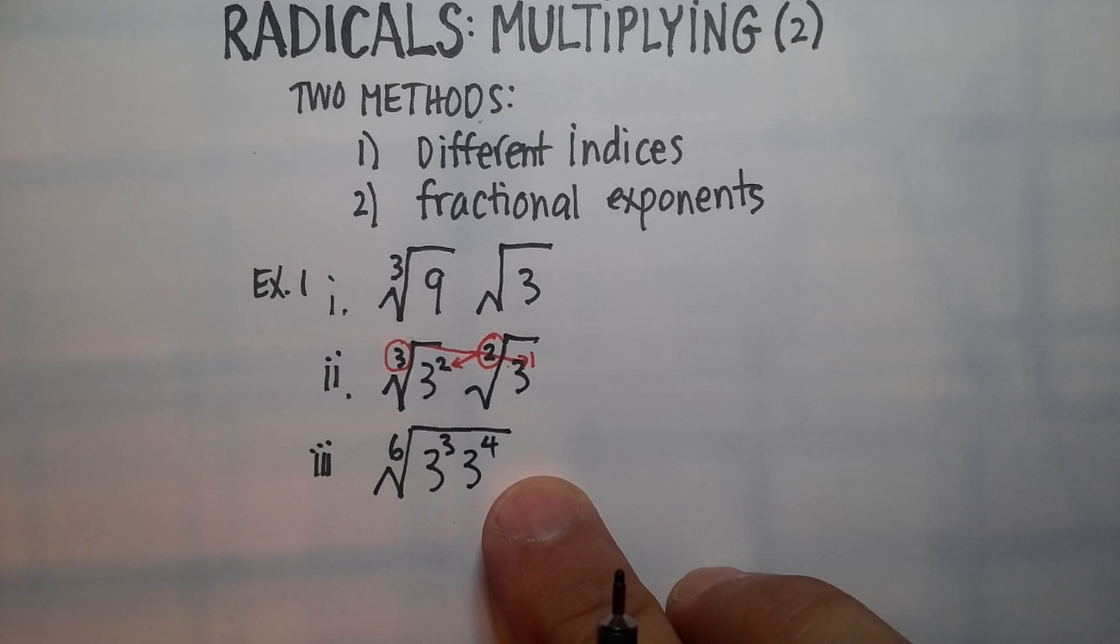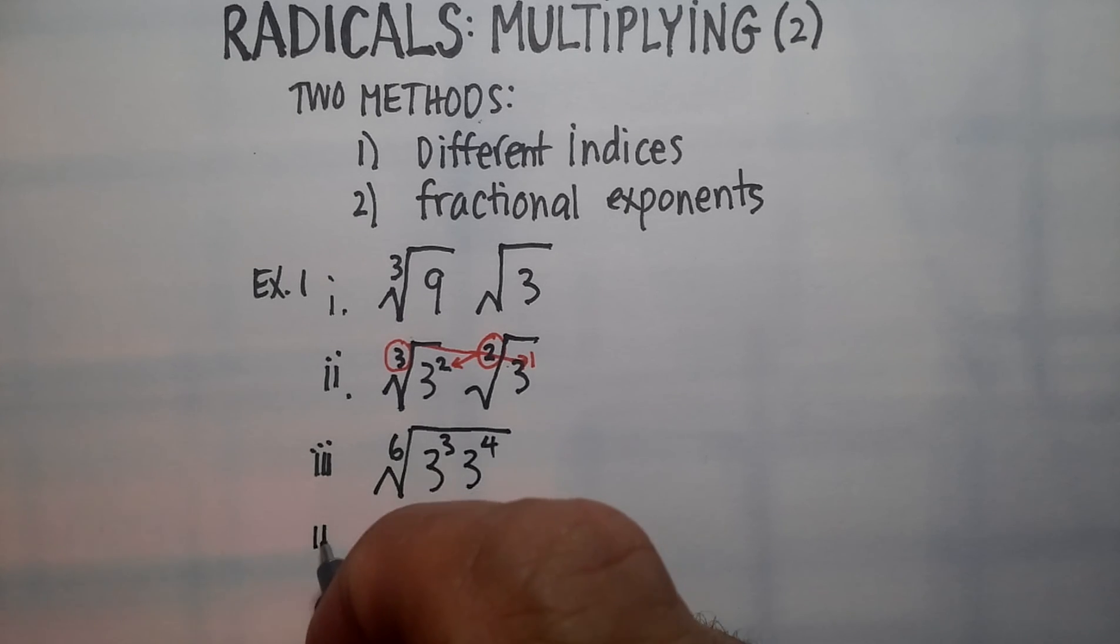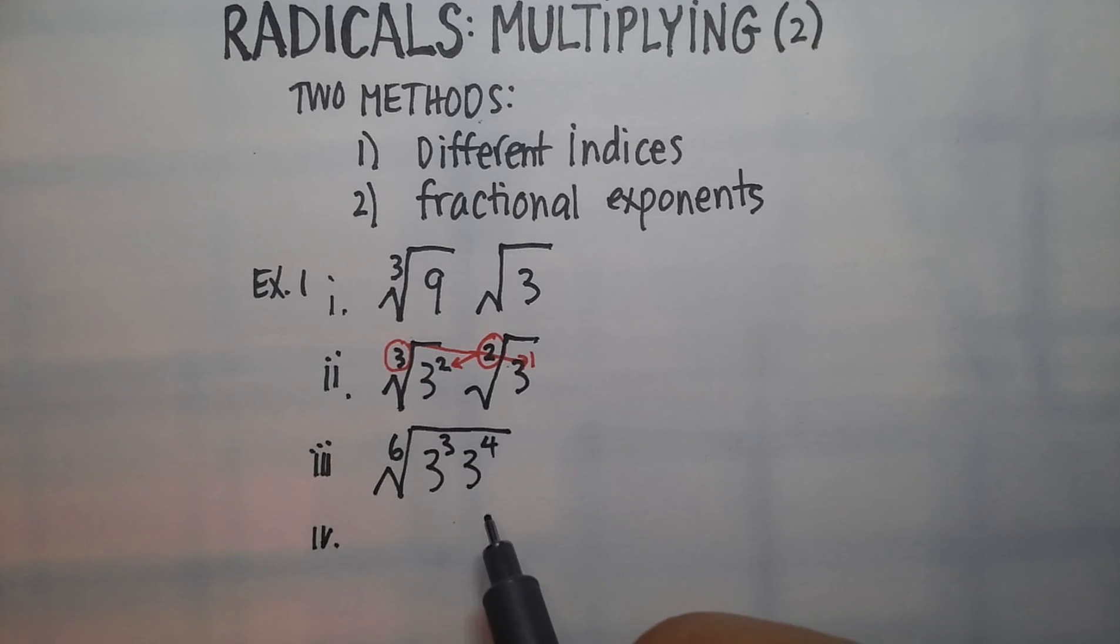Okay? Now, you can add, using the rules for exponents, you can add exponents when the bases are the same, can't you? So I'm going to go three plus four, and I'm going to get three to the seventh.